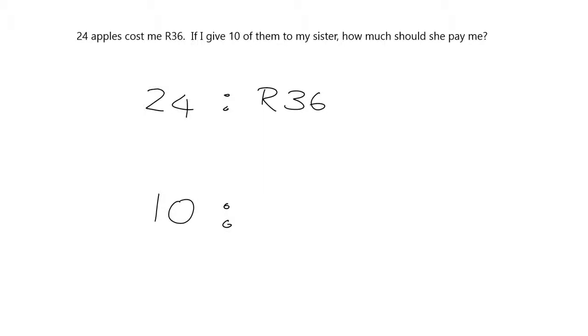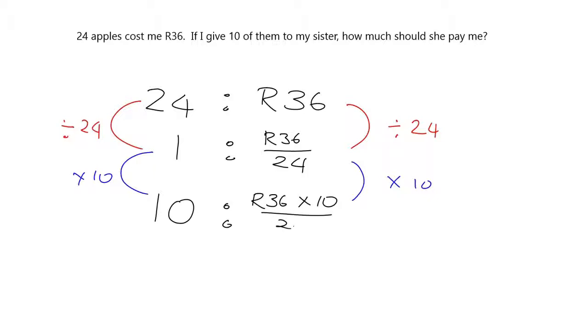I'm going to use that idea. If it's difficult to see what I've divided by, I'm going to use the idea of going to 1 first, because it's always easy to see that what I've done to get from 24 to 1 is I've just divided by 24. And so here, I'm just going to divide by 24, and so what I'll get is 36 over 24. And then, what do I do to get up to the 10? Well, I've multiplied here by 10, so I'll multiply here by 10. And what I'll get is 36 times 10 over 24.